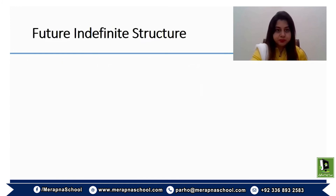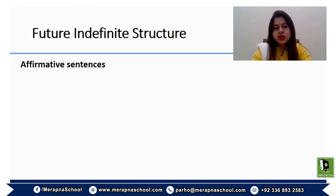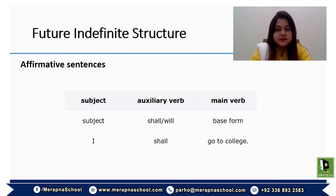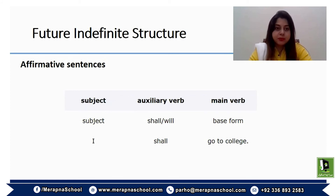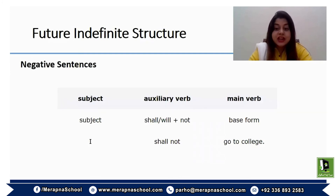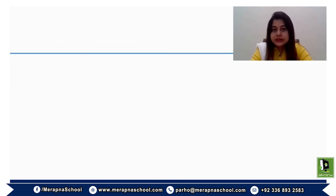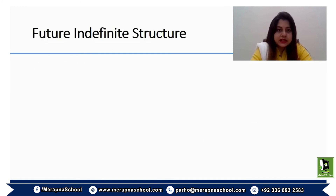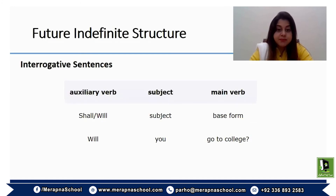Now let's go through the structure of future indefinite tense, which is comparatively very simple. For affirmative sentences: subject + shall/will + base form of the verb (first form). For example, 'I shall go to the college.' For negative sentences: 'I shall not go to college today.'